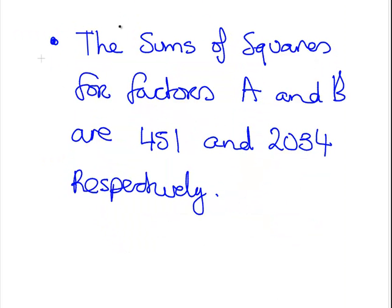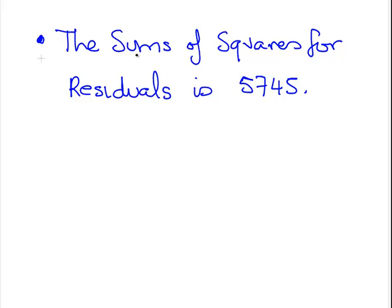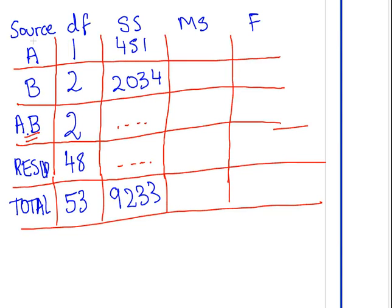So, we haven't gone through all the information we have been given yet. I am just sort of going through it step by step. So, the sums of squares for factor A and factor B is 451 and 2034. I'll actually just sort of make that bit clear. That's 3 there. 2034. Let's put that in there. So, 451, 2034. But, do we have enough information yet for these? Not enough yet. Let's keep going. That the next piece of information I have, the sums of squares for residuals is 5745.